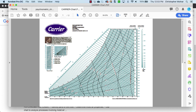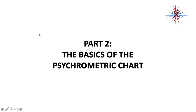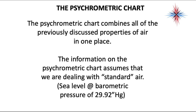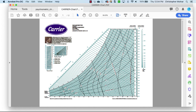The psychometric chart is a chart that combines all of the previously discussed properties from part one of our videos — properties of air — in one place. The information on the psychometric chart assumes that we are dealing with standard air, meaning sea level at barometric pressures of 29.92 inches of mercury. All the information is here in one place: specific air, wet bulb, dry bulb, relative humidity — everything else is here on one chart.